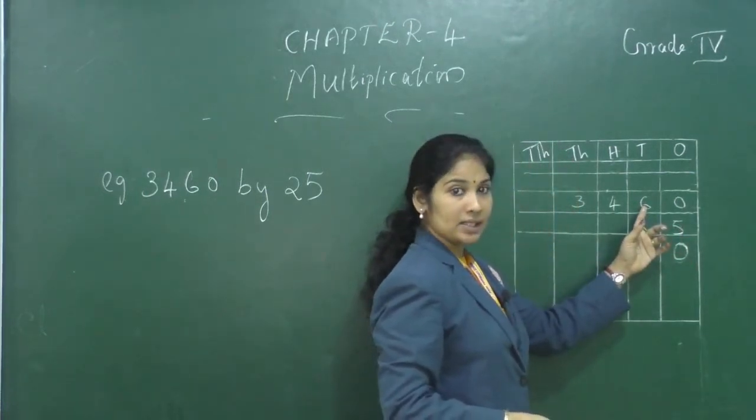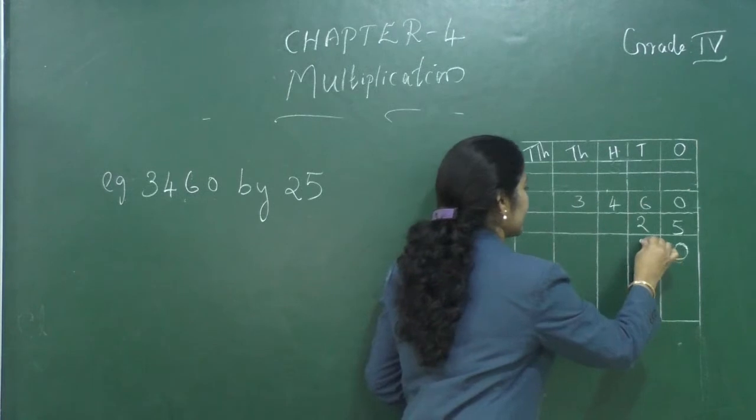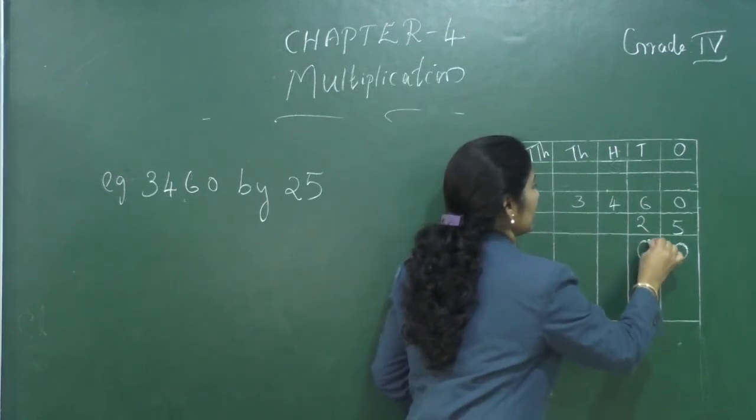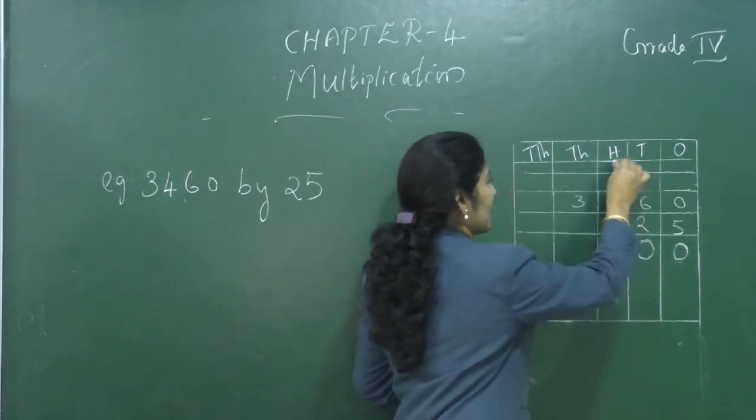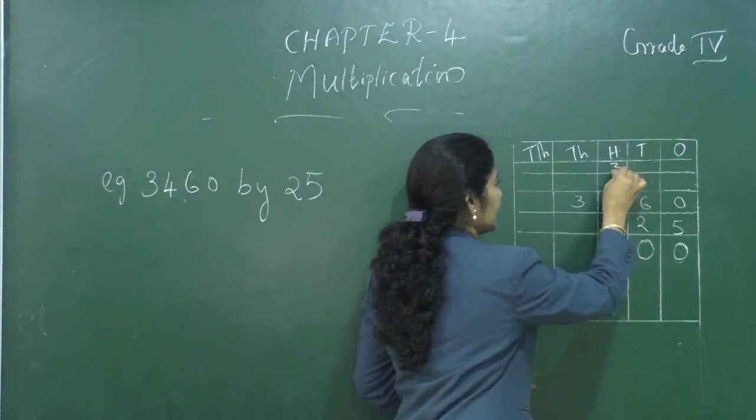Now, what is 5 into 6? 30. 0 we can write at the 10's place and 3 carry over, we can write at the 100's place.